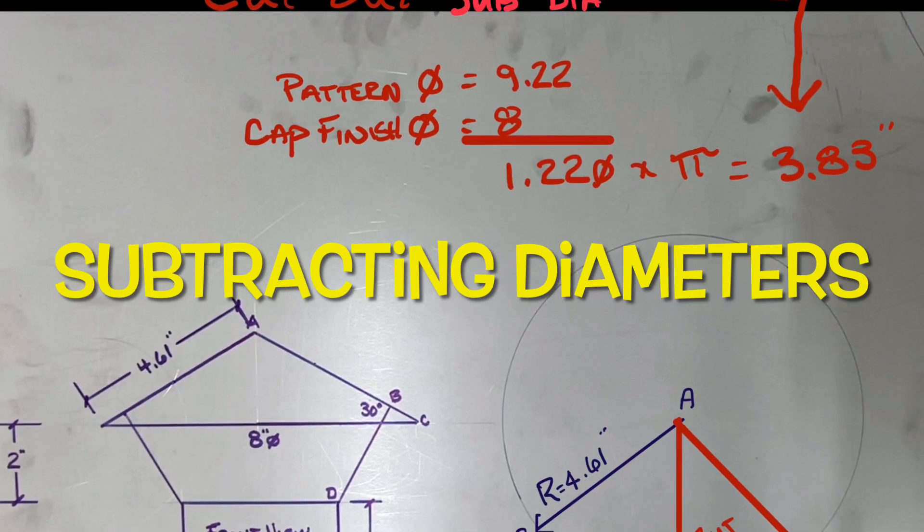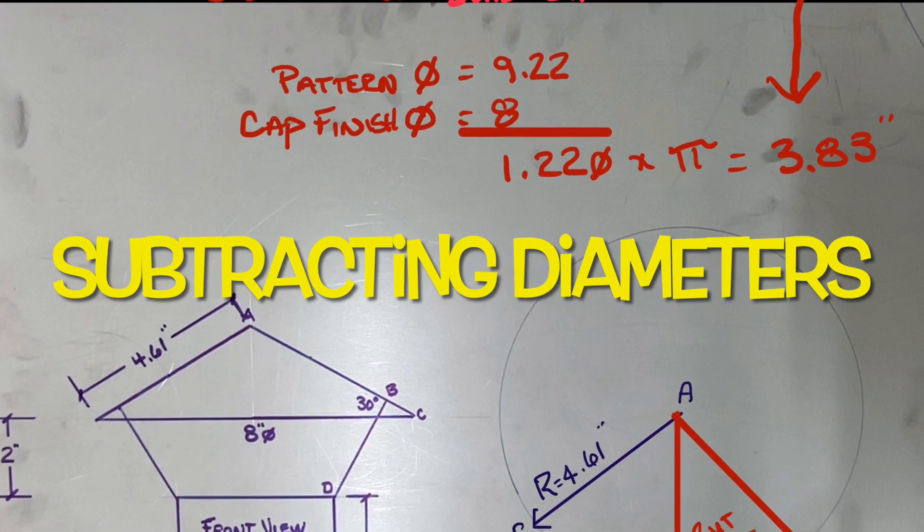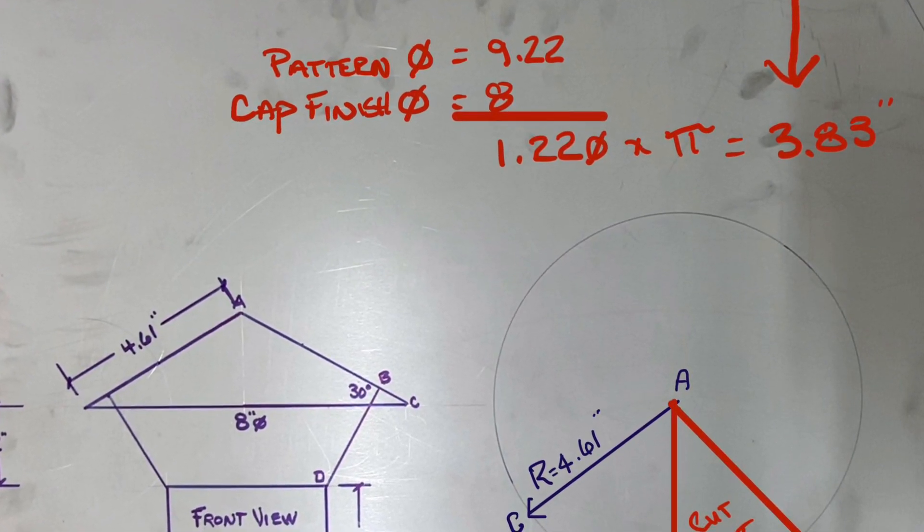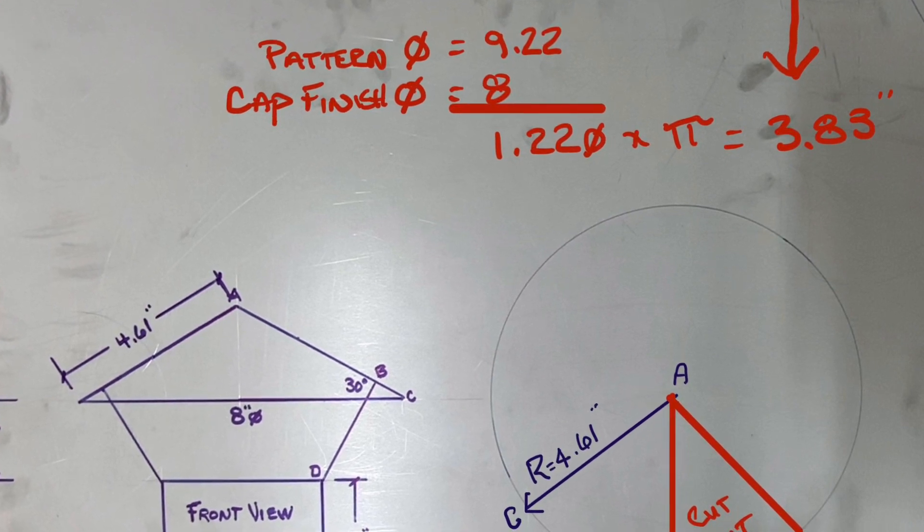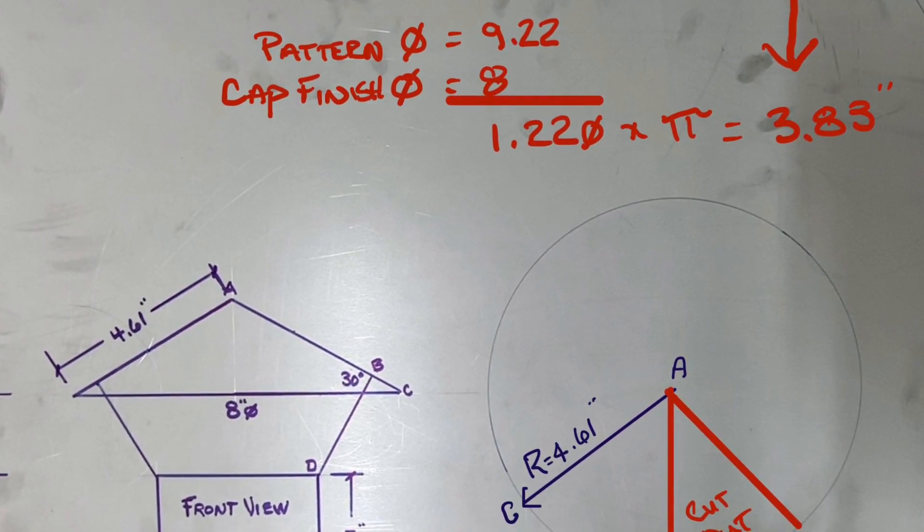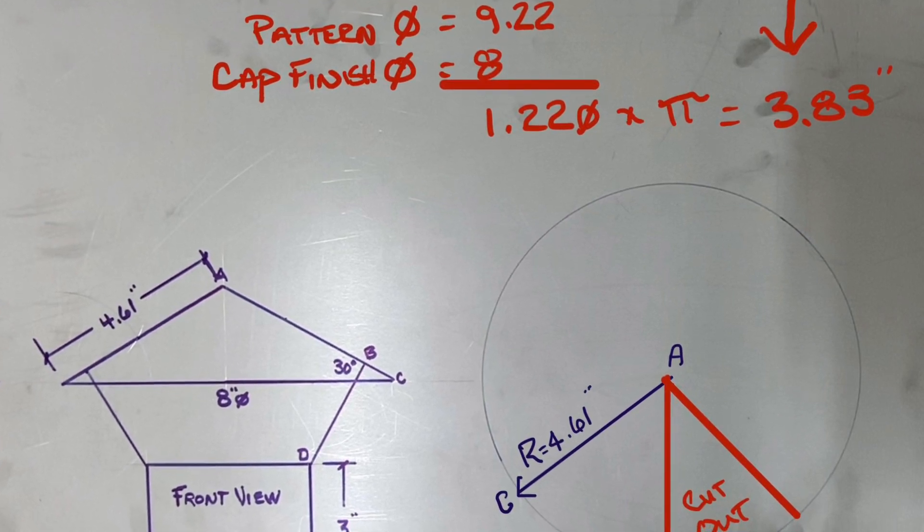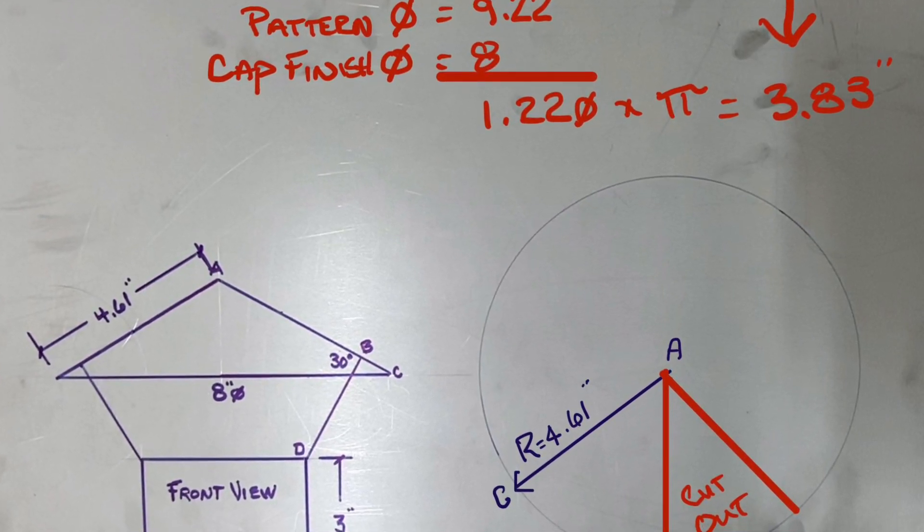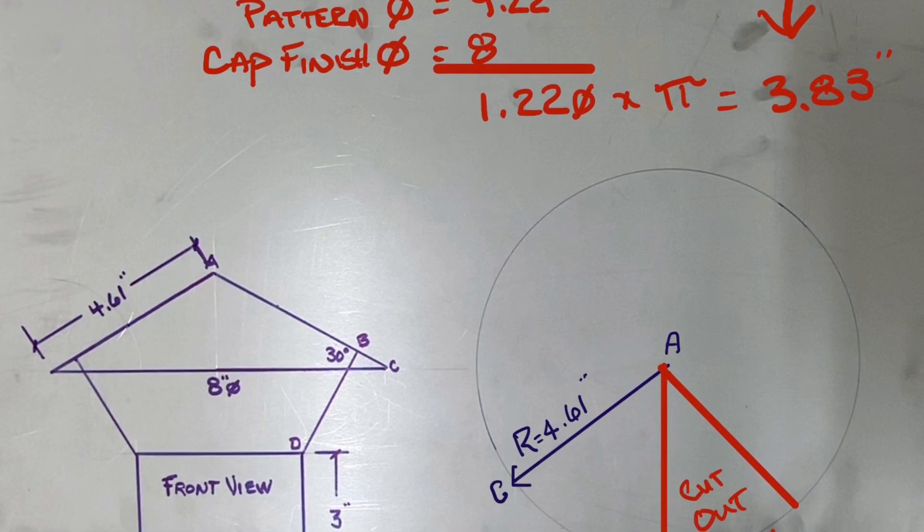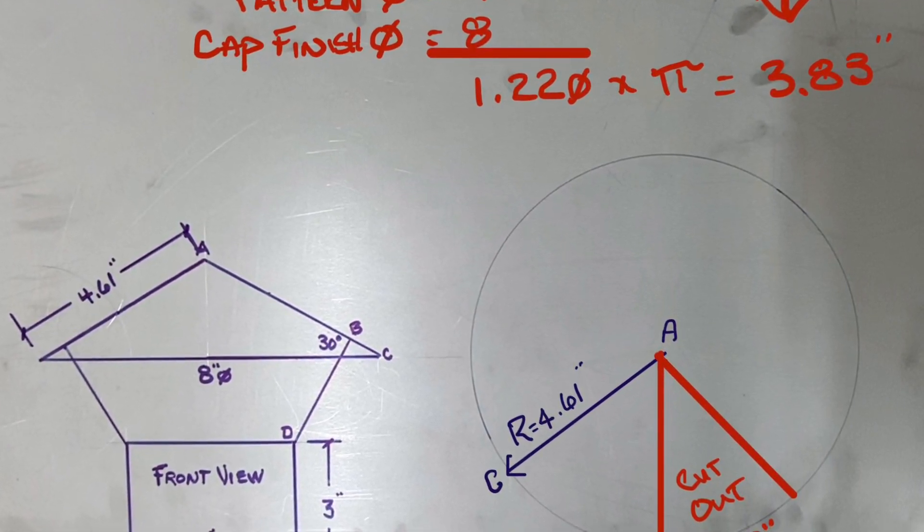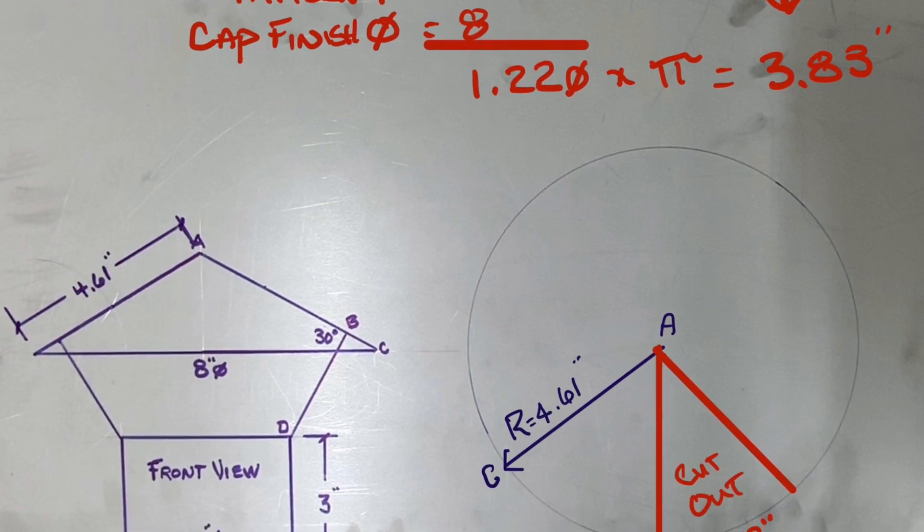A second way to find the cutout is by subtracting the diameters. My pattern diameter is 9.22 and the cap is finished diameter is 8 inch. Therefore that would leave me with 9.22 minus 8 equals 1.22 times pi would equal 3.83 as your cutout.